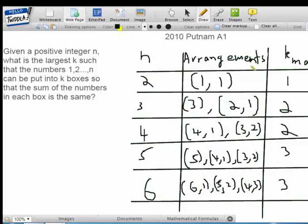Anyway, n equals 2, k max is 1. 3, 2. 4, 2. 5, 3. 6, 3. Okay, so we can see some sort of pattern here.